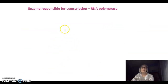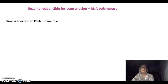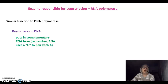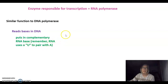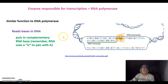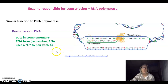Tonight we are talking about how the cell makes these three types of RNA. The enzyme responsible for transcription is called RNA polymerase. It has a very similar function to DNA polymerase — it reads the bases in DNA and puts complementary RNA bases in when reading the DNA bases. However, RNA uses a U to pair with A instead of a T. So where there is an A in DNA, a U is being put into RNA.